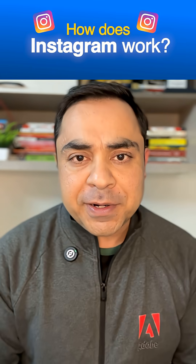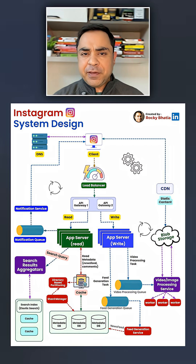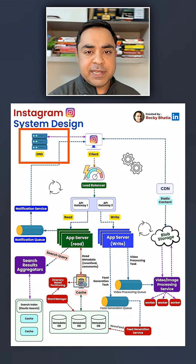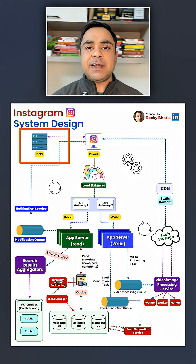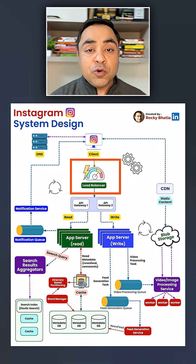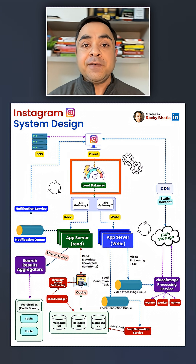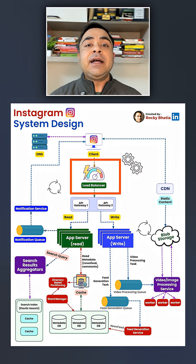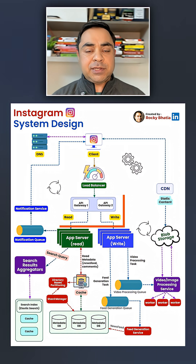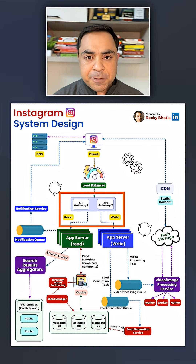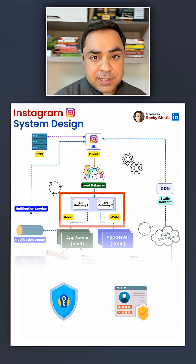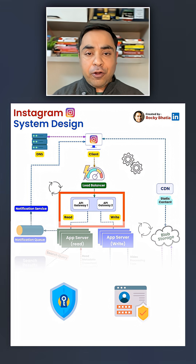Have you ever thought what happens when you open the Instagram app? The very first thing that happens is it calls DNS, which resolves the IP address. Then the request goes to a load balancer, which divides the data and determines which server will handle which request. Then it goes to the API gateway, which takes care of authentication and authorization.